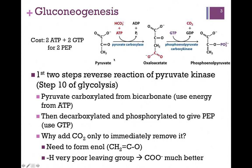Now the question is, why did we add the carboxyl group in one step to simply take it away in the next step? If we compare pyruvate to phosphoenol pyruvate, to convert pyruvate directly to PEP, we'd have to use hydrogen as a leaving group from that methyl group on pyruvate, and that does not make a very good leaving group. That's why we needed to add the carboxyl group first — it makes a very good leaving group, and therefore we can form the enol that we need in the PEP product.